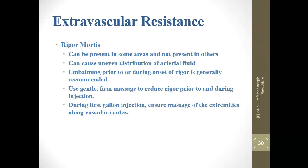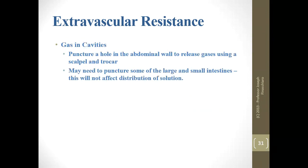Rigor can be present in some areas and not others, causing uneven distribution of arterial fluid. Embalming prior to or during the onset of rigor is generally recommended for multiple reasons. Use gentle, firm massage to reduce rigor prior to and during injection, and during the first gallon ensure you are massaging the extremities along vascular routes — in the direction things are flowing.